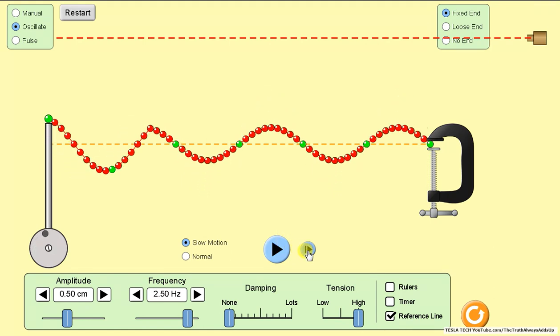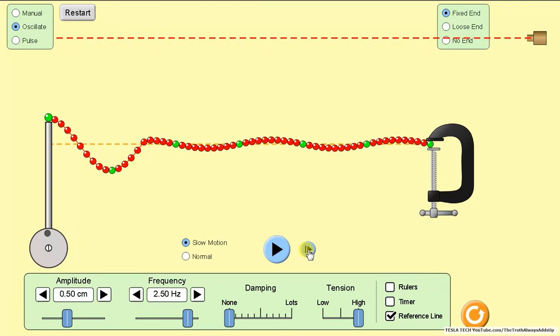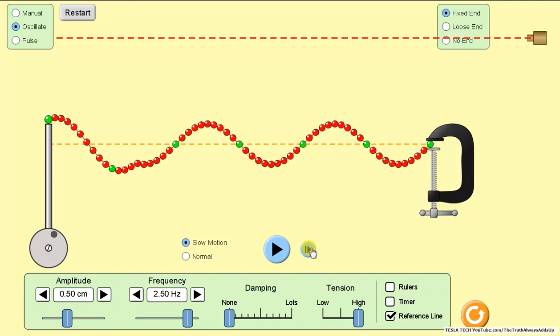I'm thinking that Birkeland currents are just a form of a standing wave. See, it's almost all the way back now. But each time it does that, it's adding power to the Birkeland current or the standing wave, whatever you want to call it.